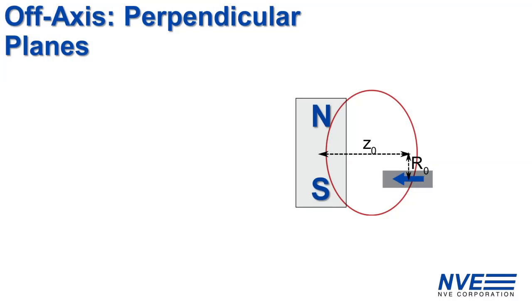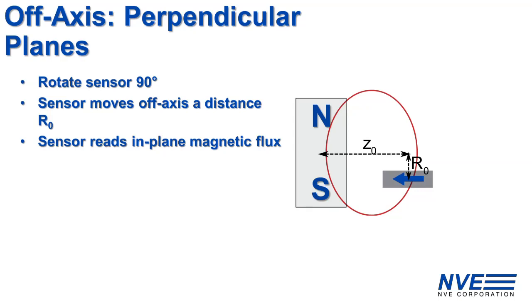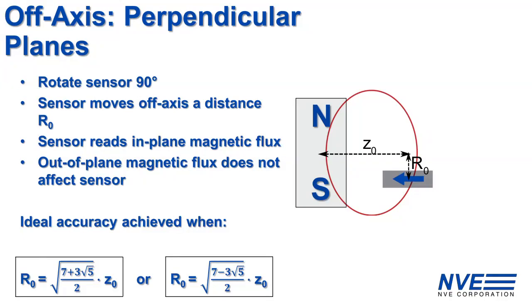We've seen how to make off-axis angle sensing accurate by rotating the sensor 90 degrees, moving the sensor radially off-axis a distance R0. The sensor reads the in-plane component of the magnetic flux. High accuracy is possible because the sensor is not affected by out-of-plane magnetic flux. Finding the ideal sensor location is easy. In this case, there are two possible solutions. Just make sure you have a calculator handy.